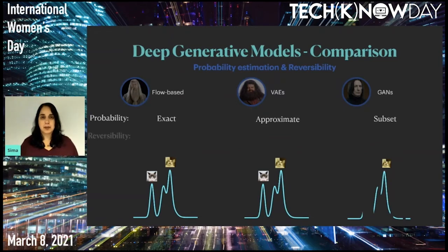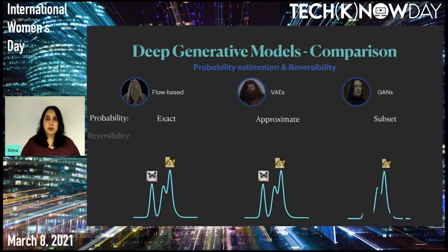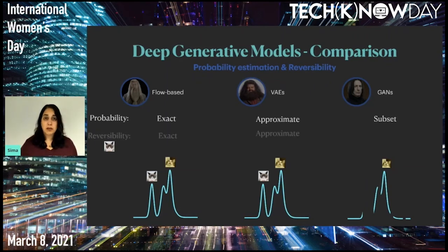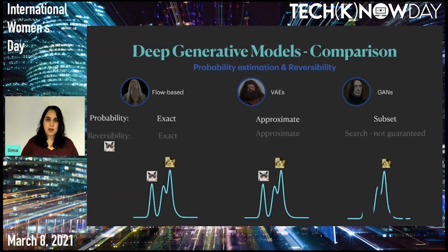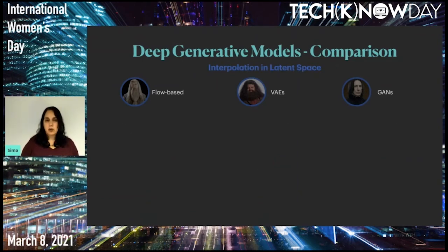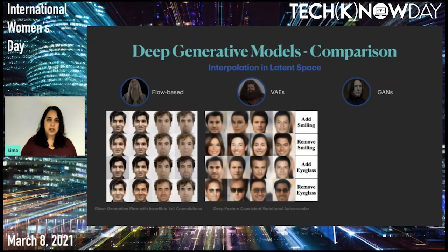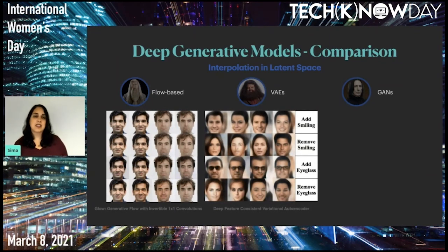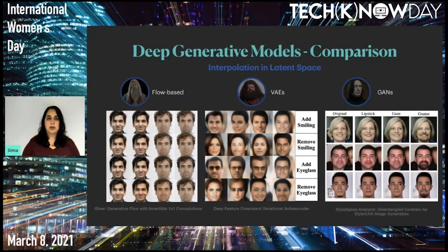Reversibility-wise, flows and VAEs both have a mapping between image space and latent space, so you can find the Z needed to reconstruct a specific image exactly or approximately. With GANs there is no such mapping — you'd have to search the entire Z space, with no guarantee of finding it since only a subset of the distribution is learned. The latent space of both flows and VAEs is normally distributed, which creates order that allows changing a single attribute and interpolating in latent space to generate smooth videos. With GANs, there is no such regularization, making this much harder, though recent papers have made progress on it.